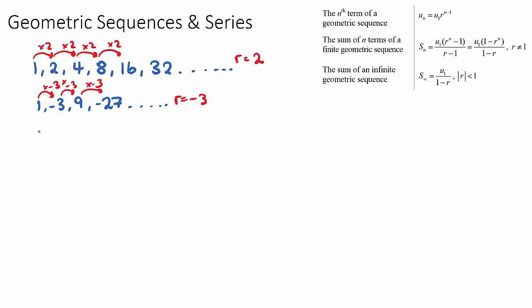Another example might be 32, 16, 8, 4, then we have 2, 1, 1 half, 1 quarter, and so on. Now we have a sequence that's shrinking, it's getting smaller. Our ratio here will be positive 1 half, because 32 times 1 half is 16, times 1 half is 8, times 1 half is 4.